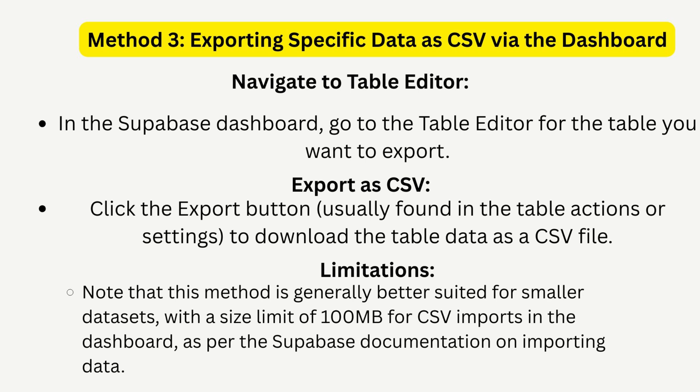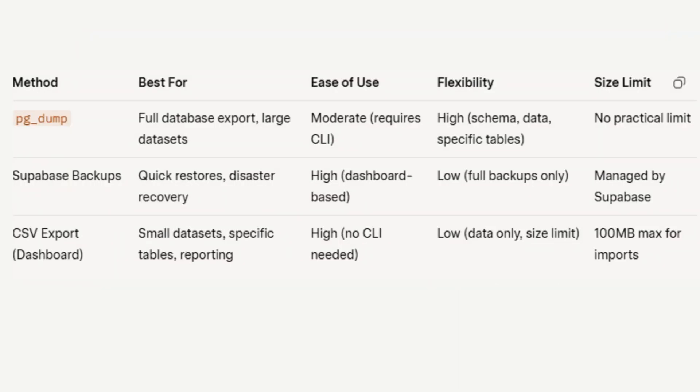If you hit a snag like a connection error with PG Dump, double-check your credentials and network settings. For backups, ensure your plan supports the retention period you need, and for CSV, watch out for the 100MB size limit.